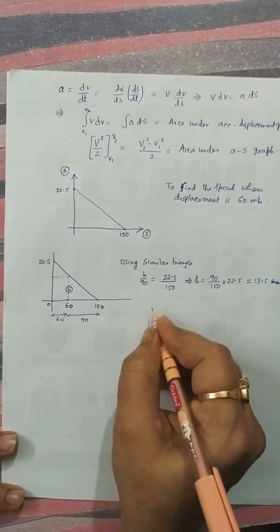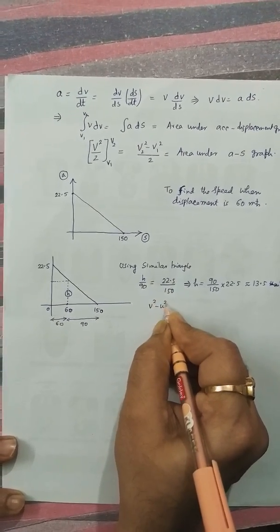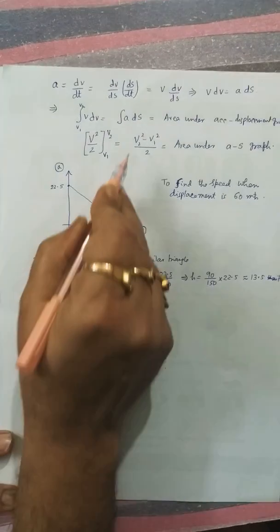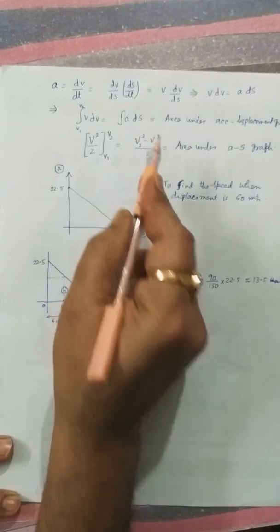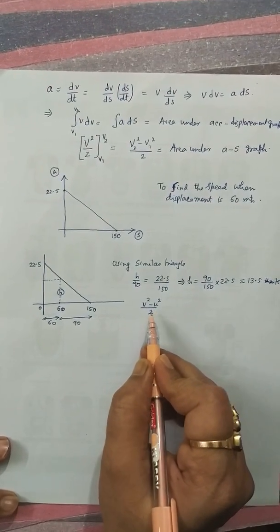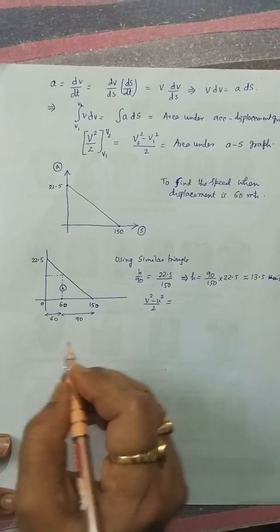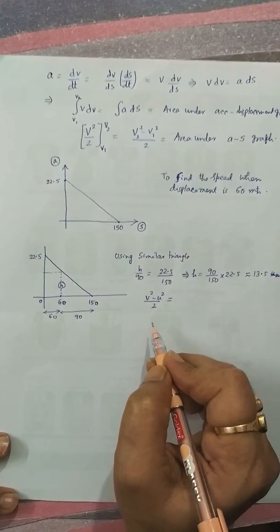Then v square minus u square by 2. If the particle initially started from 0 speed, v square minus 0 square by 2 is equal to area under the graph.